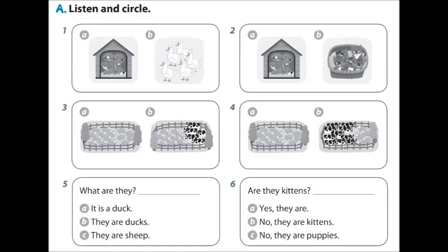There aren't any pigs. 4. There are some sheep, but there aren't any cows. 5. What are they? They are ducks.